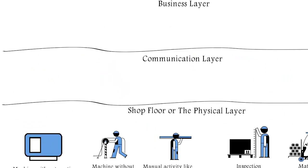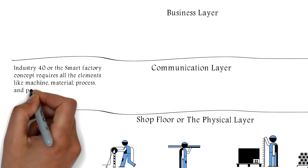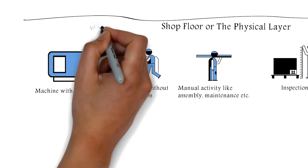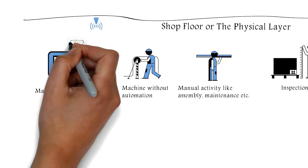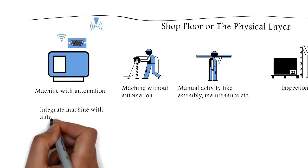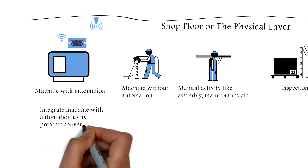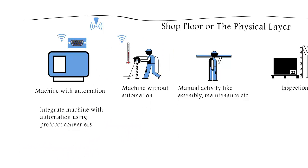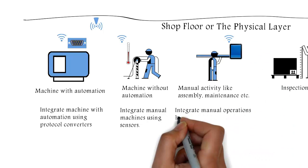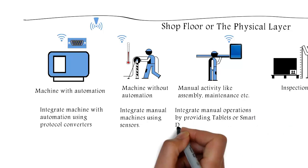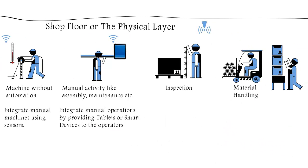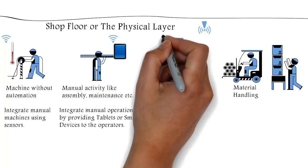Industry 4 or the smart factory concept requires all the elements like machine, process and people to be interconnected. InTouch provides solutions to integrate machines with automation using protocol converters, integrate manual machines using sensors, integrate manual operations by providing tablets or smart devices to the operators, and integrate gauges and measuring instruments using data port.